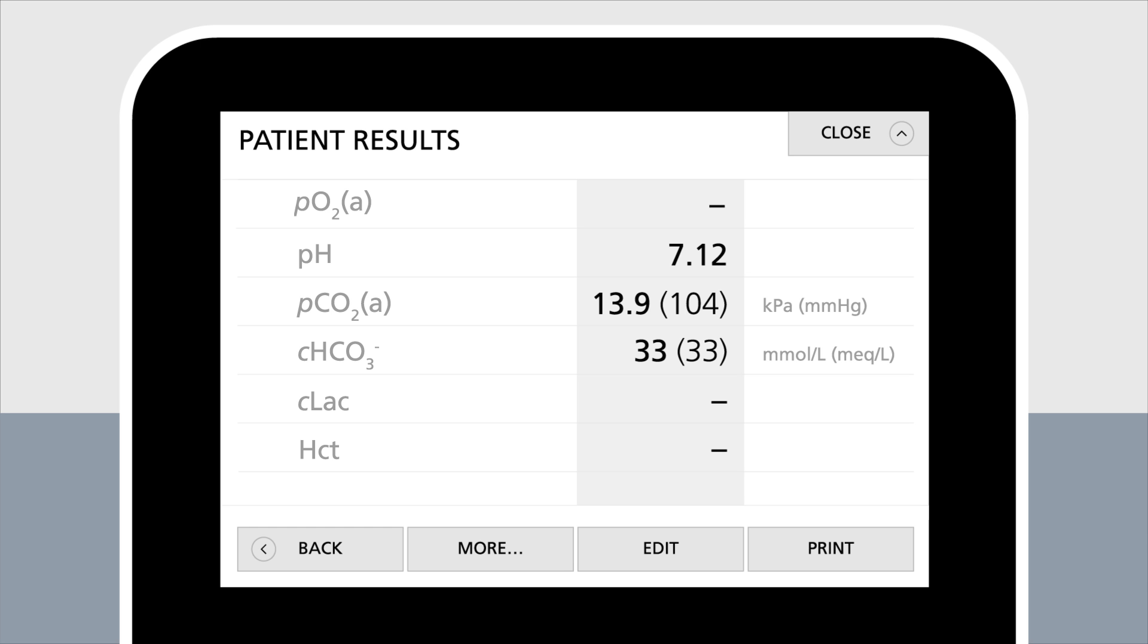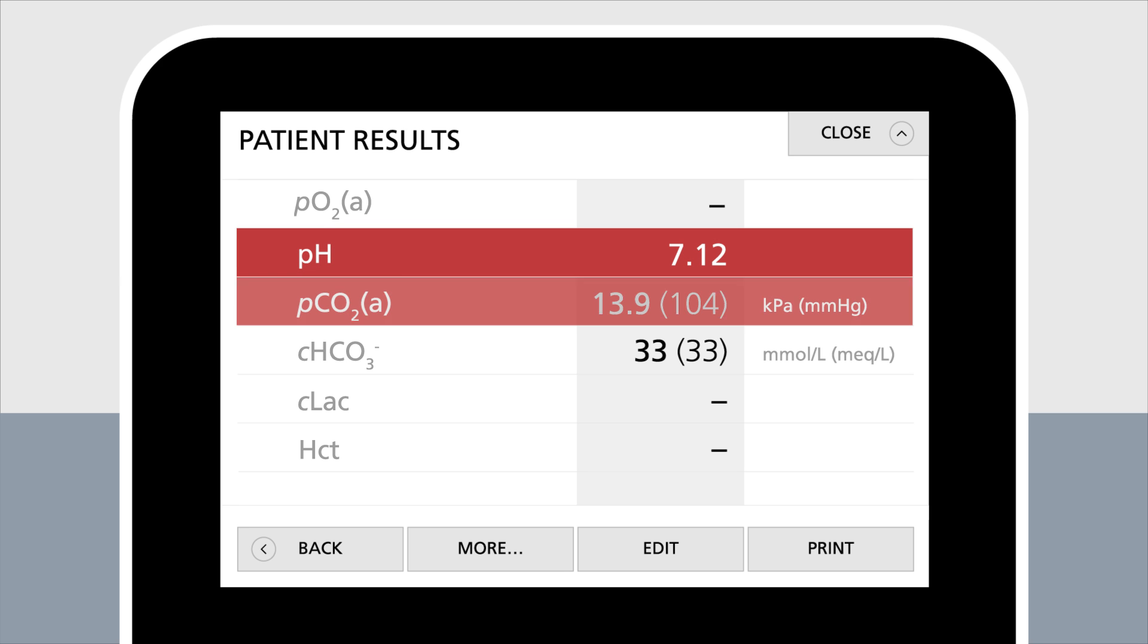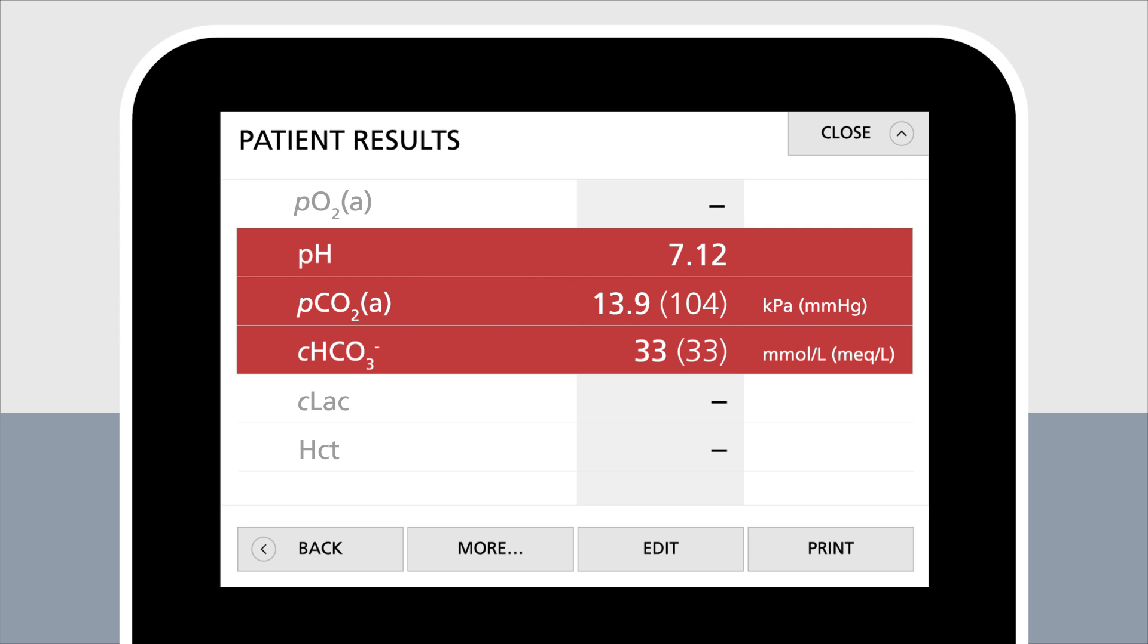Let's take an example. The patient results show the following values: pH 7.12, pCO2 13.9 kPa, and the concentration of bicarbonate is 33 millimole per liter.